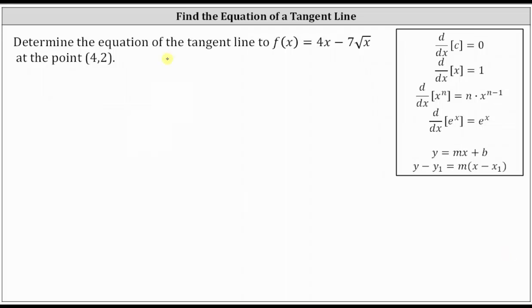We want to determine the equation of the tangent line to f(x) = 4x minus 7 square root of x at the point (4, 2). To find the equation of the tangent line, we will first need to determine the slope of the tangent line by determining the derivative function and then evaluating the derivative function at x equals 4.